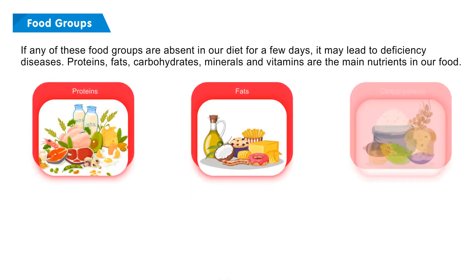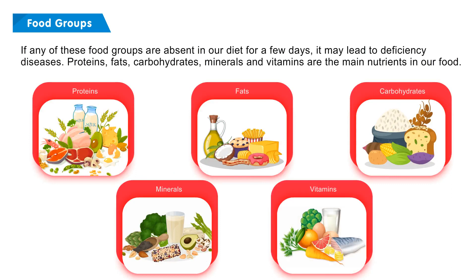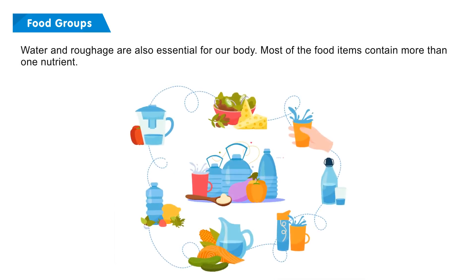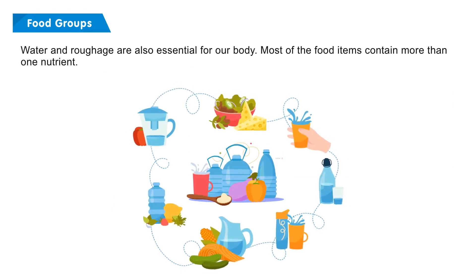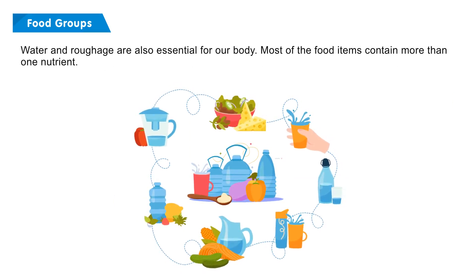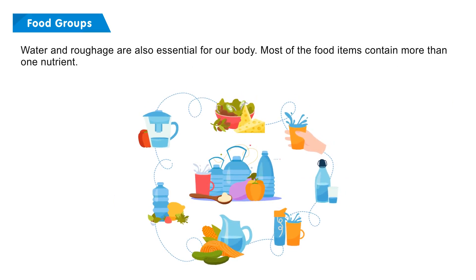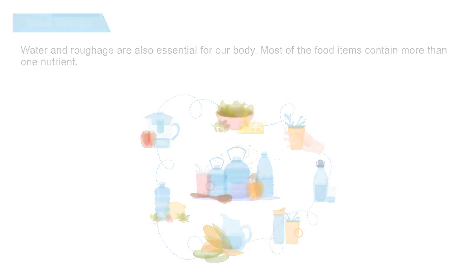Proteins, fats, carbohydrates, minerals, and vitamins are the main nutrients in our food. Water and roughage are also essential for our body. Most food items contain more than one nutrient.